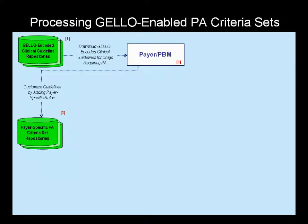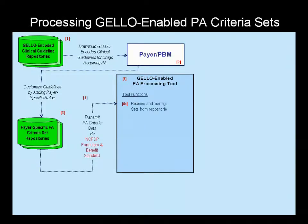These payer-specific PA criteria sets are made available to prescribers at the point of care through their product-vendor e-prescribing systems. The Jello-enabled PA processing tool acts as a processing hub between the prescriber and payer, or PBM, to automate functions related to completing and transmitting a drug PA. In our demonstration, we use a mock-up version of a PA processing tool, but these tools could be developed by product vendors either as a standalone tool, a tool linked to the e-prescribing system, or designed as an integrated module within an e-prescribing system.